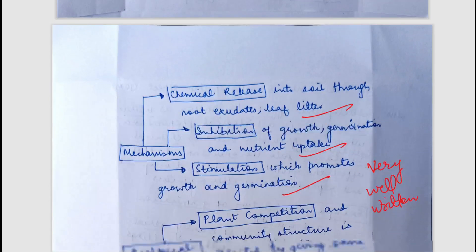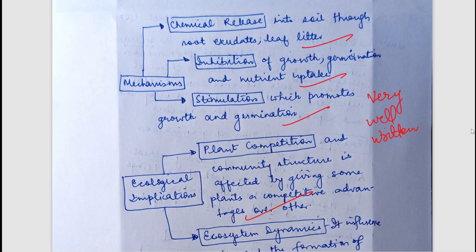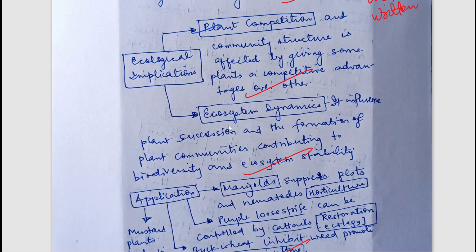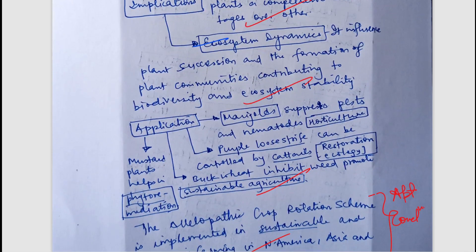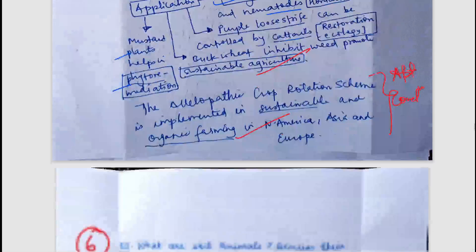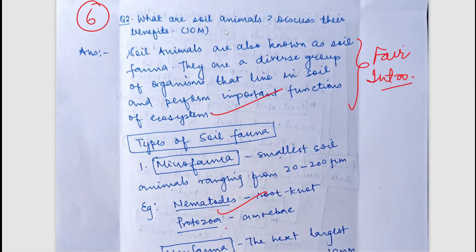Moving to the next page, the mechanisms of allelopathy have been mentioned: chemical release, inhibition, and stimulation. Biological implications such as plant competition and ecosystem dynamics have also been mentioned. Applications include marigold helping in suppression of pests and nematodes, and mustard helping in phytoremediation. A nicely written answer — you can pause and read the examples in detail and develop your own way of writing answers.